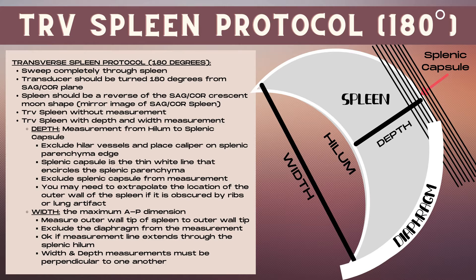The transverse spleen image will be a mirror image of the sagittal coronal spleen image. Take a transverse image without a measurement, then one with a depth and width measurement. A depth measurement goes from the hilum to the splenic capsule — exclude the hilar vessels and place the caliper on the edge of the splenic parenchyma next to the hilum. Also exclude the splenic capsule, which is the thin white line that encircles the splenic parenchyma.